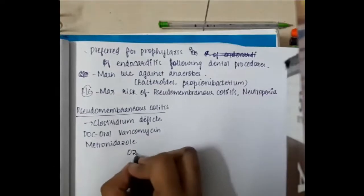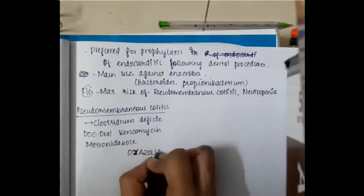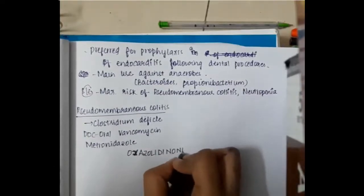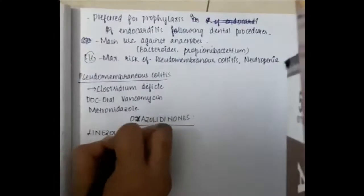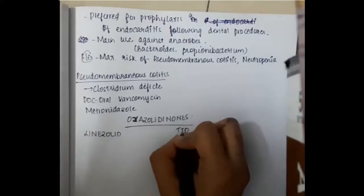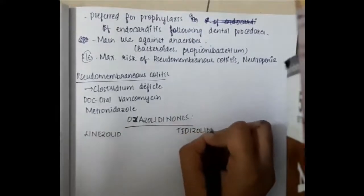Hello friends, let us now learn some important points about the drug oxazolidinediones. Oxazolidinediones contain two drugs: linezolid and tedizolid.